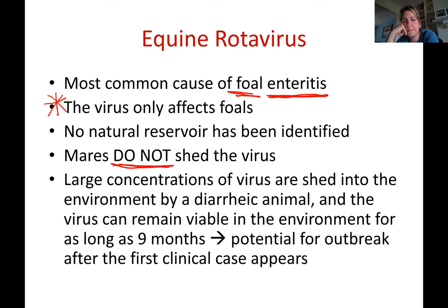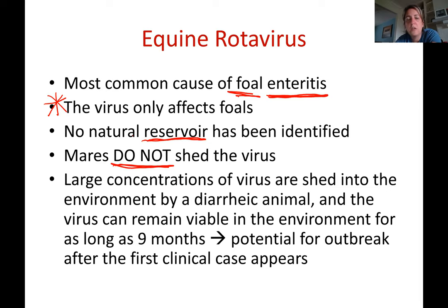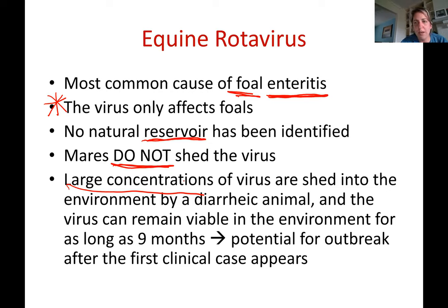Nobody knows what the reservoir is — the reservoir being what maintains the disease in nature. When foals have diarrhea, large concentrations of viruses are shed into the environment, and the virus can remain viable in the environment for as long as nine months. This means that during the next foal crop, if the virus is still in the environment, it could contaminate the next foals.